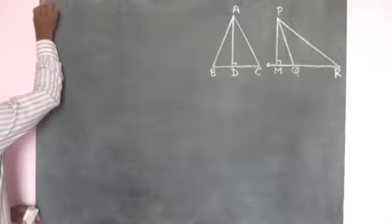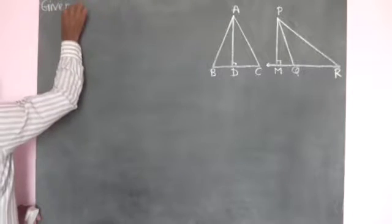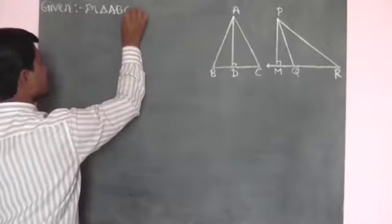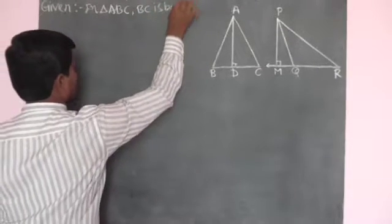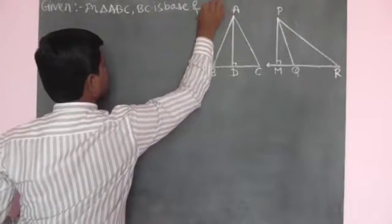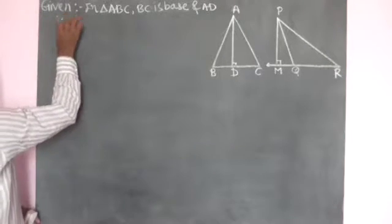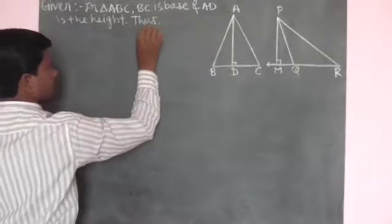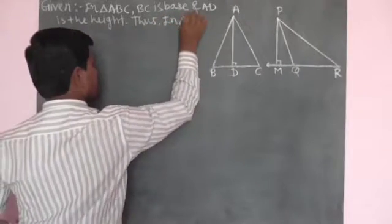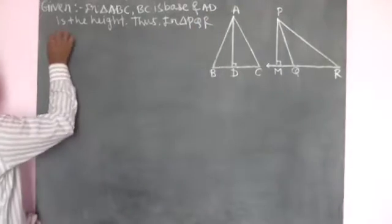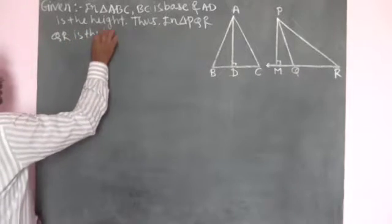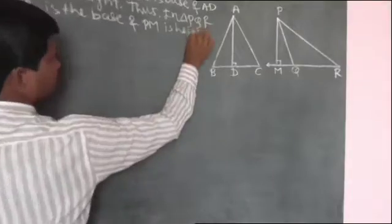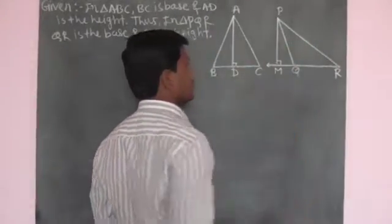Now we write the Given for the theorem. In triangle ABC, BC is the base and AD is the height. In triangle PQR, QR is the base and PM is the height. Note that PQ is not the height of the triangle.